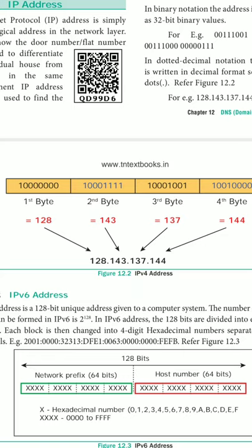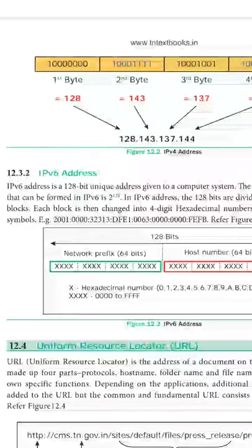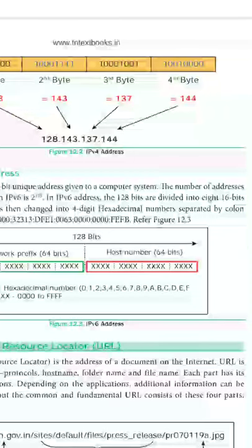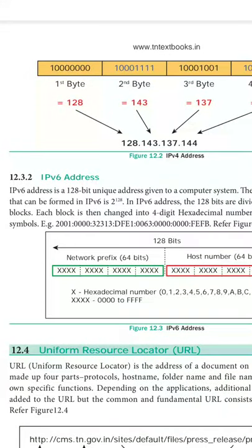IPv6 is a 128-bit unique address given to a computer system, providing 2 to the power of 128 possible options. The first 64 bits represent the network prefix and the next 64 bits are the host number. These are given in hexadecimal numbers separated by colons.